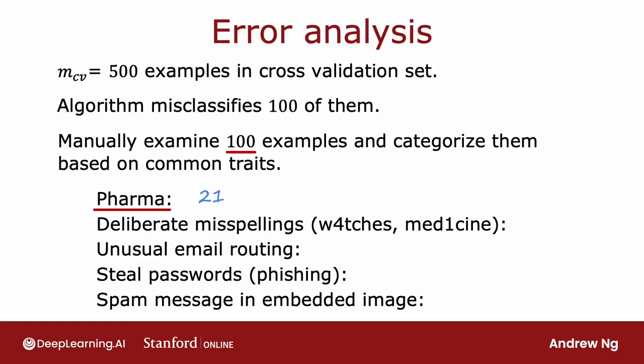Or if you suspect that deliberate misspellings may be tripping up your spam classifier, you go through and count how many misclassified examples had a deliberate misspelling — say 3 out of 100. Or looking through the email routing info, 7 have unusual email routing, and 18 are emails trying to steal passwords, or phishing emails.